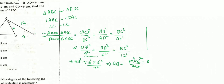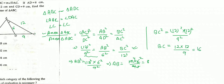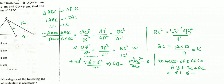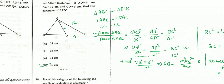Now we find the perimeter. Perimeter of triangle ABC = AB + BC + AC = 8 + 16 + 12 = 36 cm. Option D is correct.